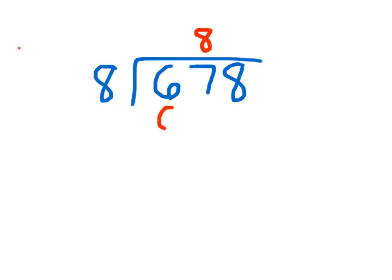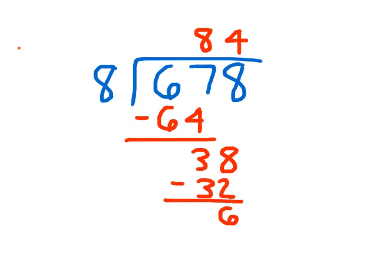We'll notice that we place the 8 in that 10s place because we were looking at 67 10s. 8 times 8 is 64. 67 minus 64 is 3, and we can bring down the 8. 38 divided by 8 is 4 because 4 times 8 is 32, and 38 minus 32 is 6. So our remainder is 6.